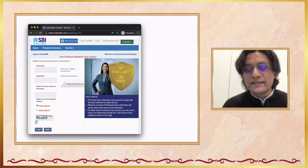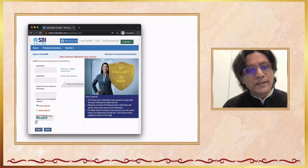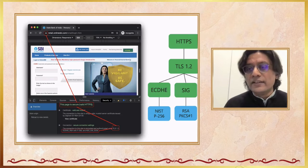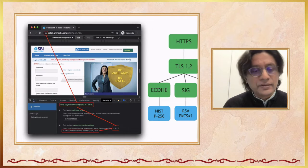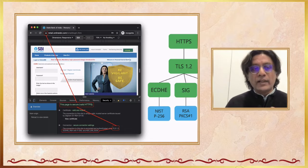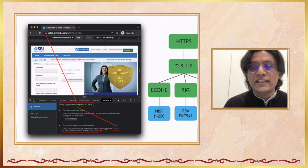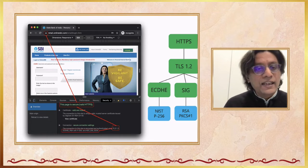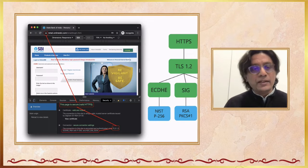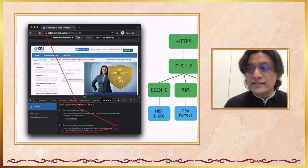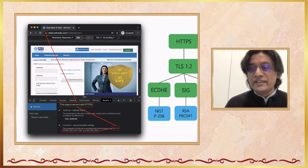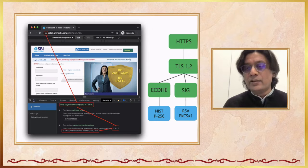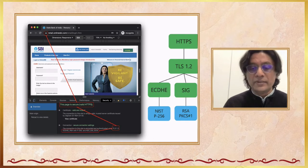What gives me the confidence to access this account and do my transfers? It's the little lock on top. If I dig into that little lock in the Firefox developer console, what I'll see is that lock basically means we're using HTTPS, which means there is a secure channel between my browser and the bank. The secure channel is implemented using TLS 1.2, which internally uses a Diffie-Hellman construction, a signature construction, and authenticated encryption — notably NIST P256 for Diffie-Hellman, RSA for signatures, and AES-GCM for encryption.